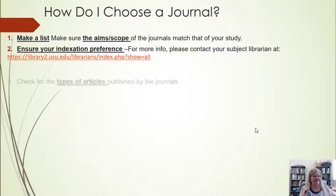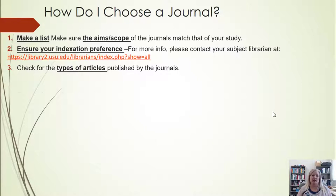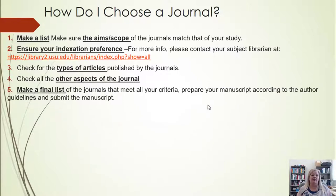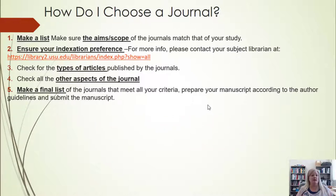Also check for the types of articles published by the journals you're looking at. For instance, if you are using a lot of data and the articles you're looking at feel more anecdotal, make sure you're reading the articles in the journals you're considering and find where yours is the best match — not just for indexing, but also for the rhetorical context of what you're writing. Make sure you're looking at other aspects of the journal. For instance, the NCTE requires you to be a member in order to submit, and there is a yearly membership fee. Some journals are print-only still; some are only online.